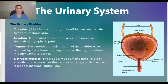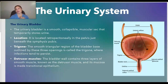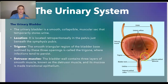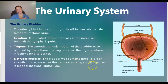The bladder is a smooth, collapsible, muscular sac that temporarily stores urine. It is located retroperitoneally in the pelvis, just behind the symphysis pubis. The smooth triangular region of the bladder base outlined by three openings is called the trigone, where infections tend to persist. The bladder wall contains three layers of smooth muscle known as the detrusor muscle, and its mucosa is made of transitional epithelium cells.